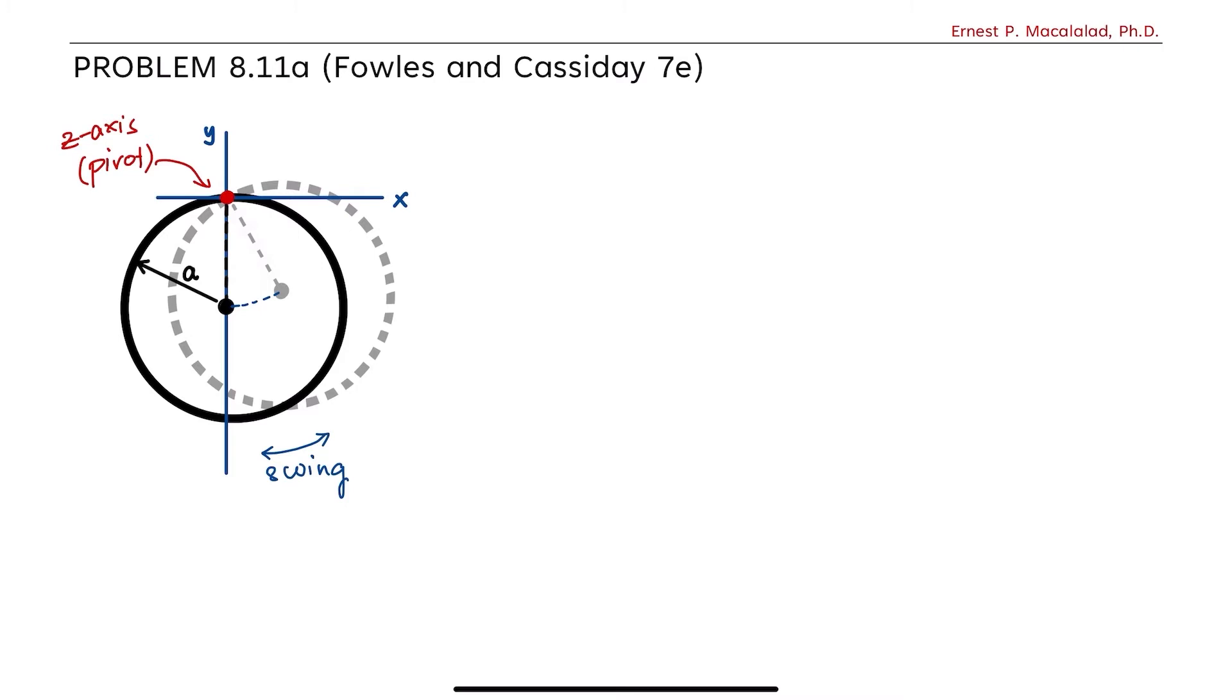The problem reads: A circular loop of radius A swings as a physical pendulum about a point on its circumference.